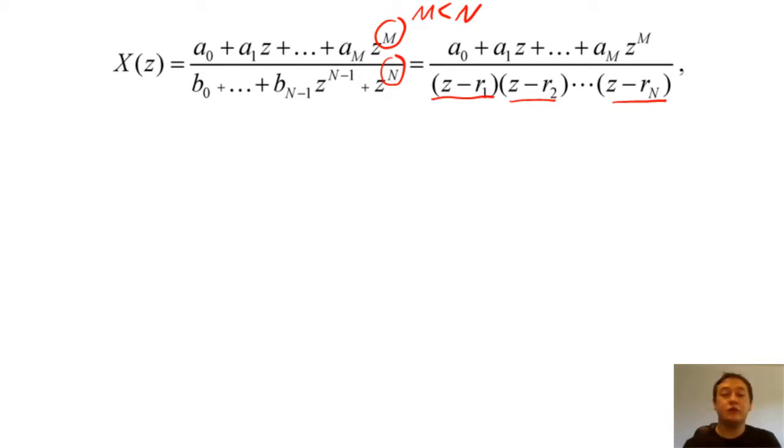When we rewritten X of Z into this form, we can break X of Z down into a sum of fractional components.